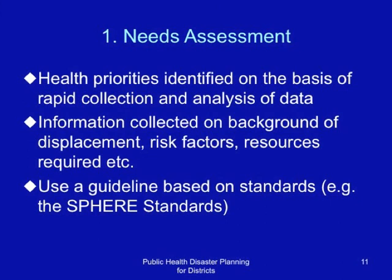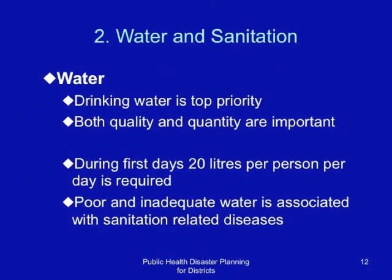Water and sanitation: Drinking water is a top priority in complex emergencies. Both quality and quantity are important. During the first days, 20 liters of water per person per day should be the target. Poor and inadequate water supply is associated with sanitation-related diseases.